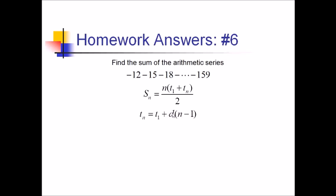So common difference out of this one. It looks like we are subtracting 3 each time. So this would be negative 3. And then we have negative 159 equals negative 12 minus 3 times n minus 1.